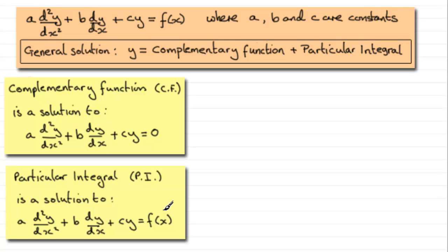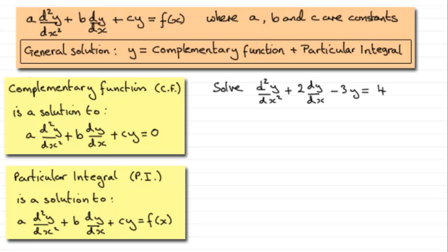The best way to demonstrate this is through an example. It's going to be a fairly straightforward example to get you into the swing of this, and we'll tackle harder examples later on. The example is: solve d²y/dx² + 2 dy/dx − 3y = 4, and we can see that the function of x here is a constant.